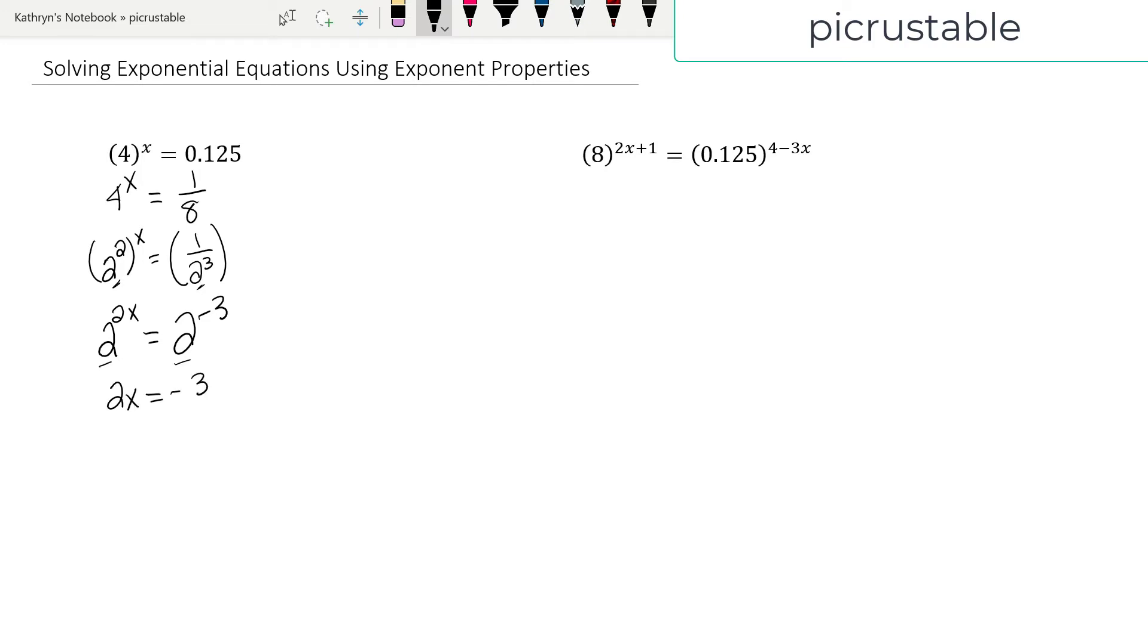2x equals negative 3, divide by 2, and so x equals negative 3 halves. And when you check it, it works.